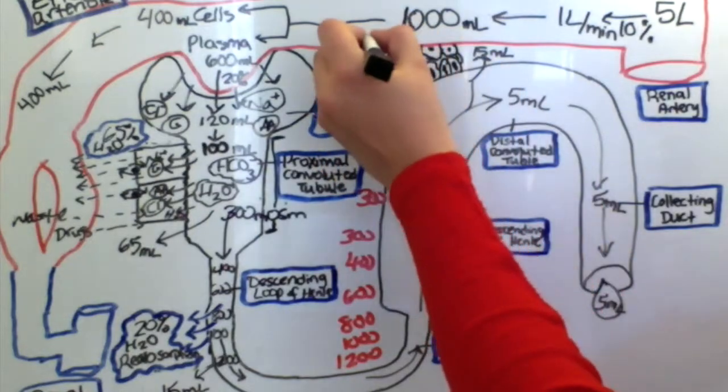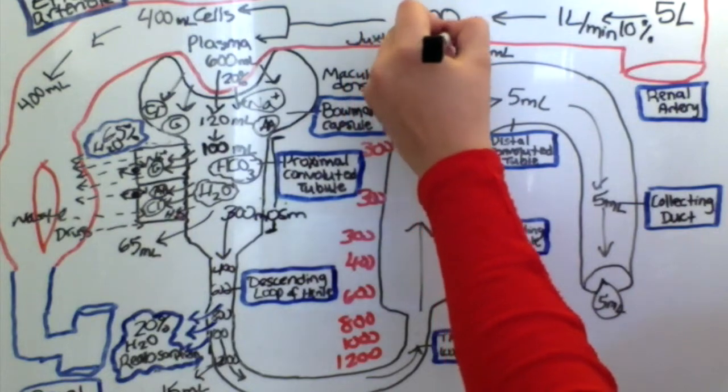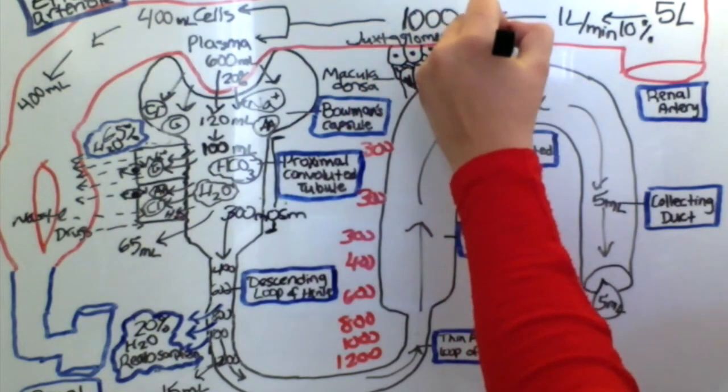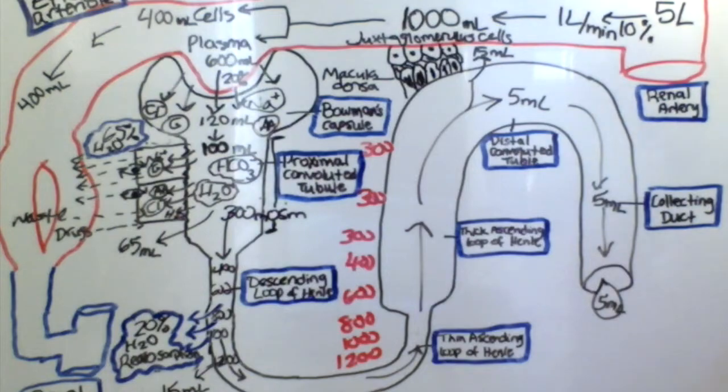These two cells, the juxtaglomerular cells and the macula densa cells, make up the juxtaglomerular apparatus.